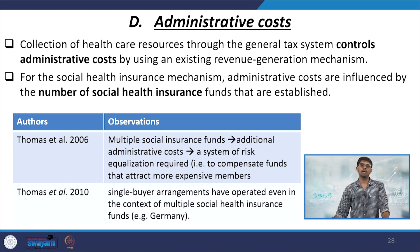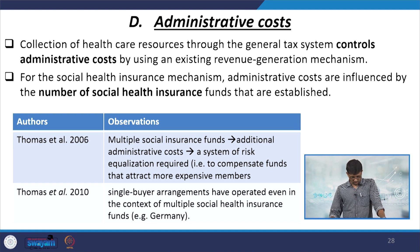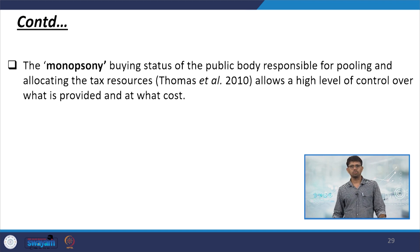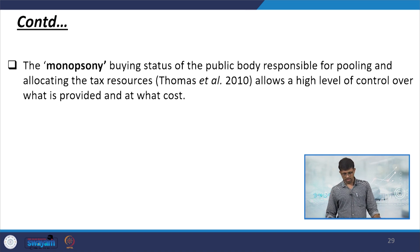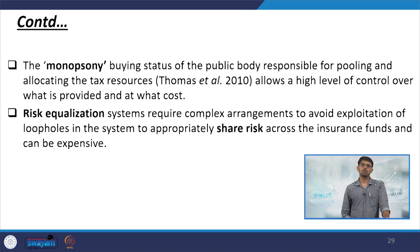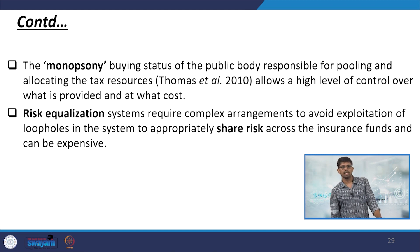In another paper, single buyer arrangements are discussed — these have operated even in the context of multiple social insurance funds, with the most important example being Germany. Another direction on this administrative cost issue is through monopsony. The monopsony buying status of the public body responsible for pooling and allocating tax resources allows a higher level of control over what is provided and at what cost. Risk equalization systems require complex arrangements to avoid exploitation of loopholes and can be expensive.